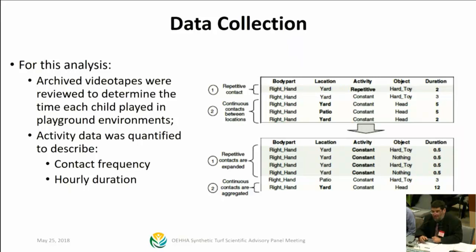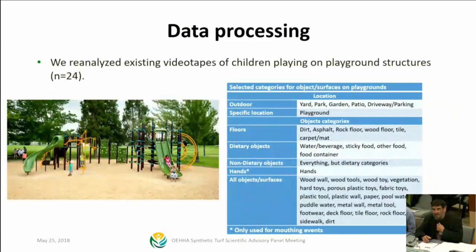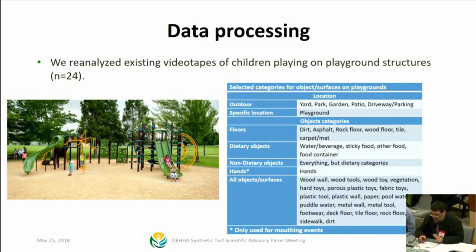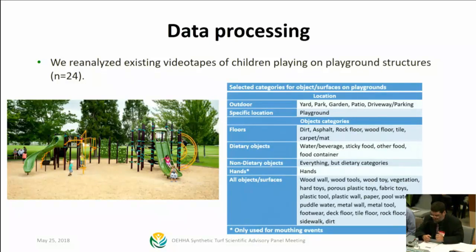They analyzed these archived videotapes. The table gives an idea of the different objects and surfaces evaluated — outdoor environments including yard, park, garden, patio, and driveway parking. Some of these environments were in an apartment complex, so there might be street-like avenues or other landscaping nearby. The total time available was about nine hours of observation period; about a little over half an hour was not in view, sometimes because kids are behind trees or under playground structures.